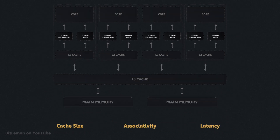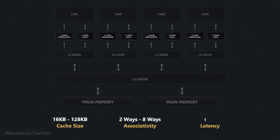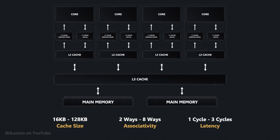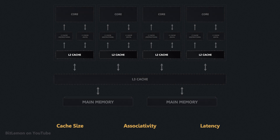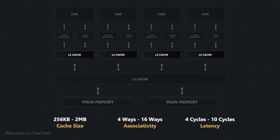The L1 cache is the smallest in the hierarchy, typically ranging from 16KB to 128KB per core. It has an associativity of between 2 and 8 ways and is the fastest among all caches, with a latency in the range of a few CPU cycles. L2 caches are slightly larger than L1, ranging from 256KB to 2MB per core, with older machines having up to several MB per core. L2 has between 4 and 16 ways of associativity and a latency of 4 to 10 CPU cycles.